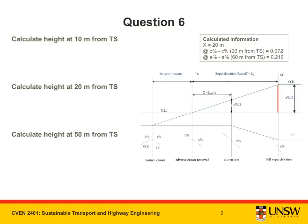Now that I have these figures I can put them into my diagram. x is equal to 20 meters, the height at crown rate is 0.072 meters, and the height at full super elevation is 0.216 meters.